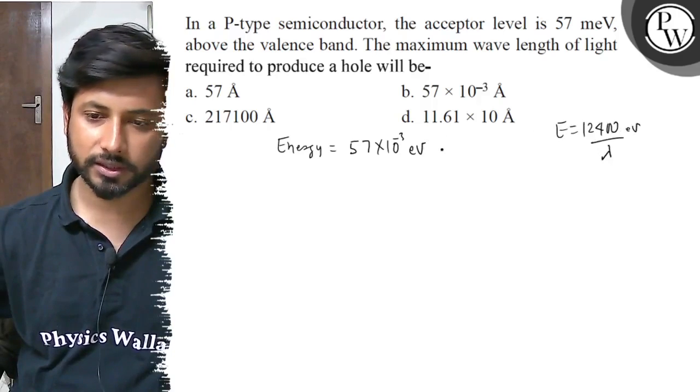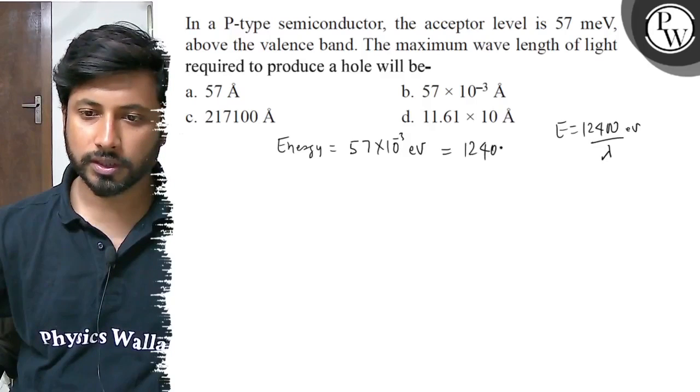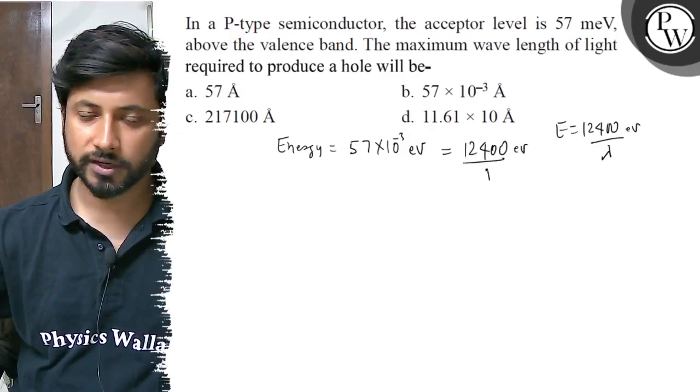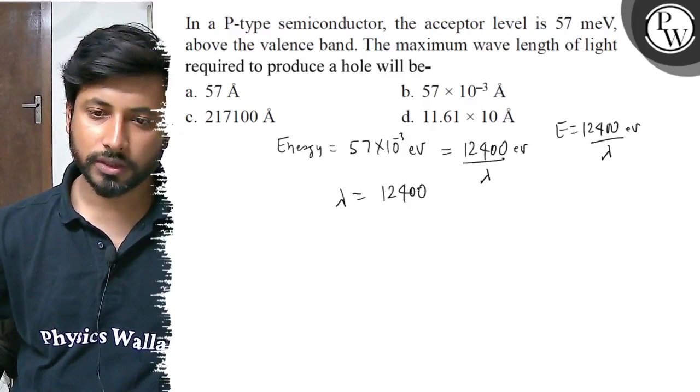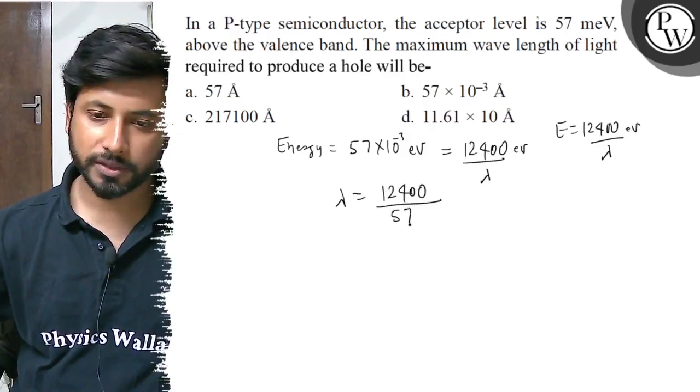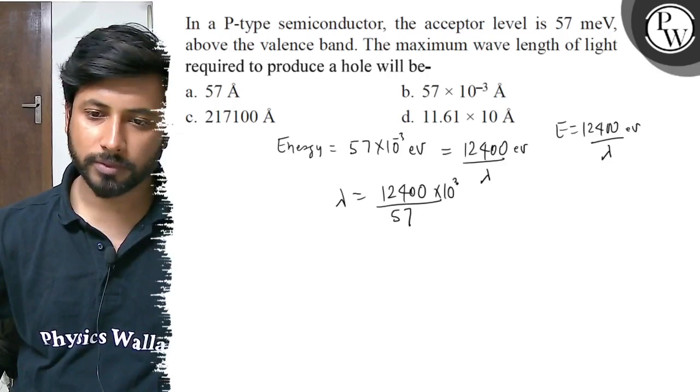So here you have lambda value equals to 12,400 electron volt divided by energy. Here you have lambda value: 12,400 divided by 57 into 10 to the power minus 3.